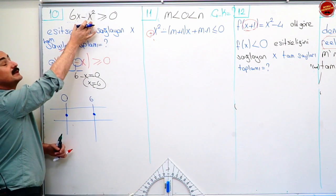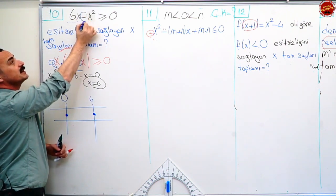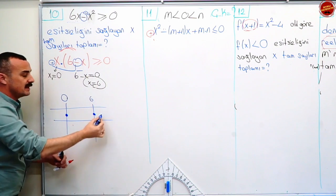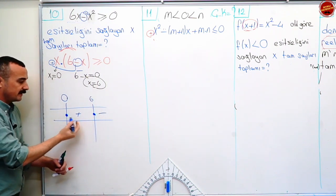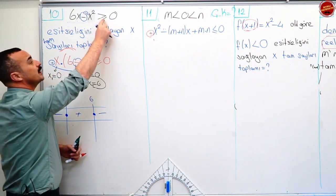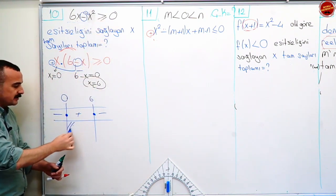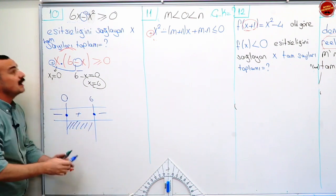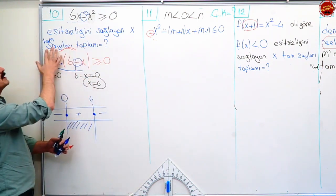Veya çarpanlarına ayrılmadan önce en büyük derecelinin işaretini de belirleyebilirsin. İşaretim eksi. Her kökte işaret değiştiriyorum: artı, eksi. Şimdi benden büyük eşit sıfır olduğu yerleri istiyor. Büyük eşit sıfır olduğu yerleri taradım.